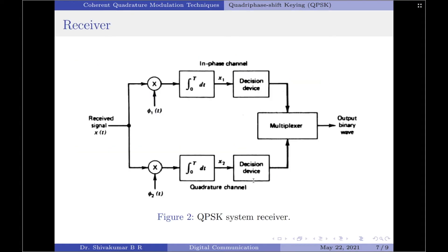Let us now move on towards the receiver. Since the QPSK transmitter uses two orthonormal basis functions, the QPSK receiver will have two correlators, each of which is supplied with a locally generated coherent reference signal. These are the same signals as what we have used at the transmitter.